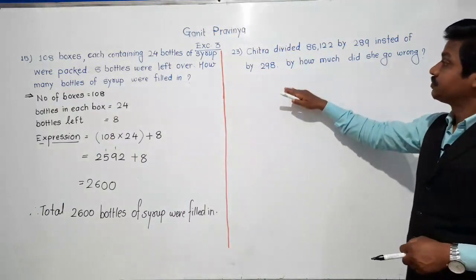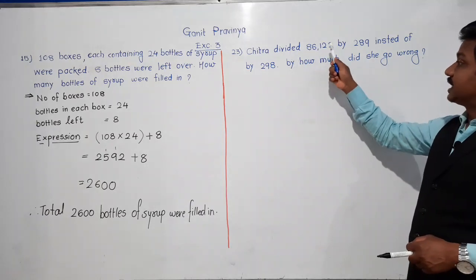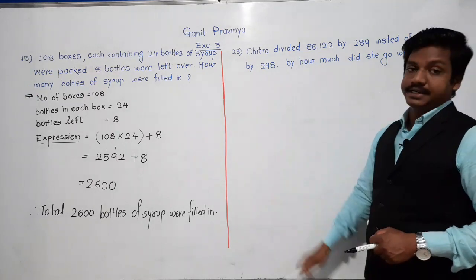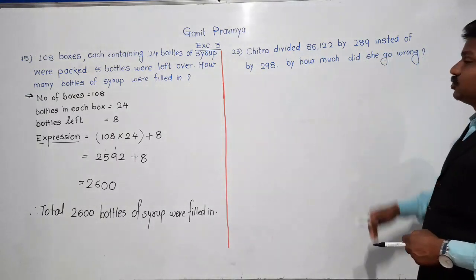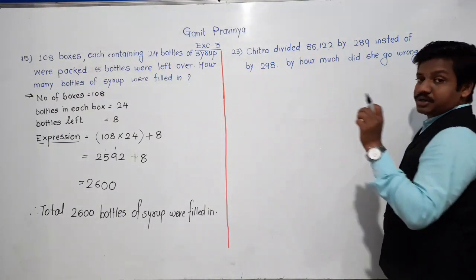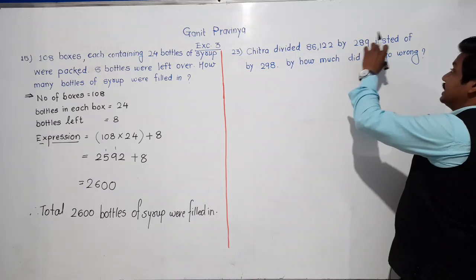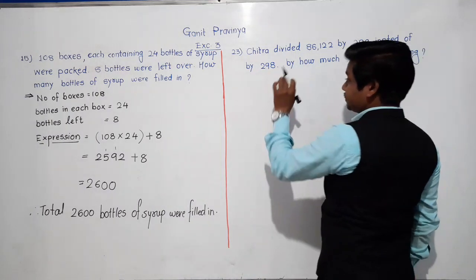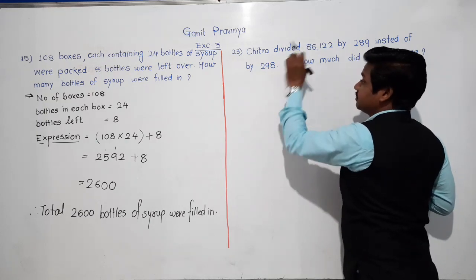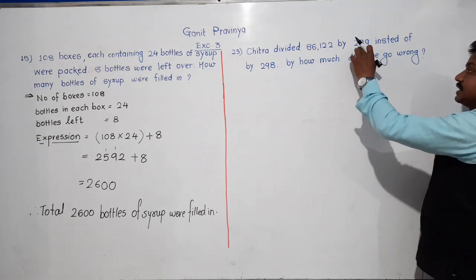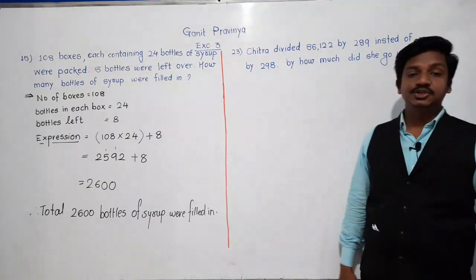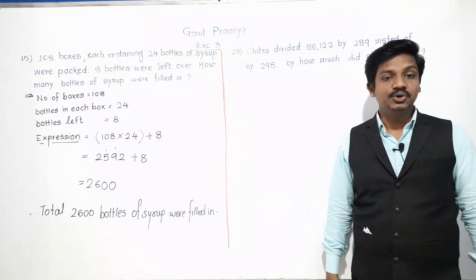It is a very easy question. Chitra divided 86,122 by 289 instead of by 298. By how much did she go wrong? So 86,122 is the number she wanted to divide. She had to divide by 298, but mistakenly she divided by 289. The question is: by how much did she go wrong?